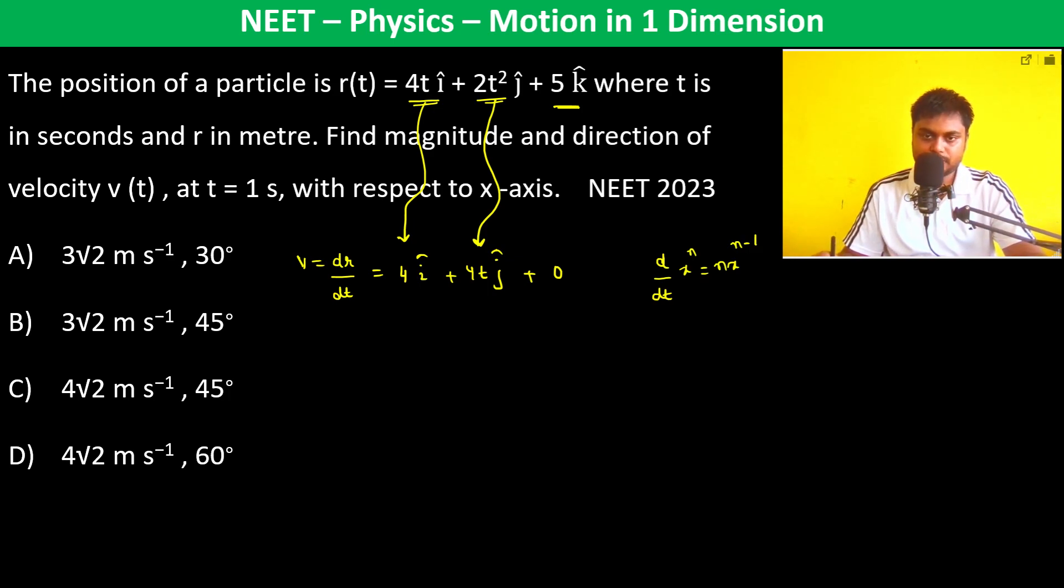Since we had t², d/dt of t² is 2t, and d/dt of t is 1. That's why we've written it this way.